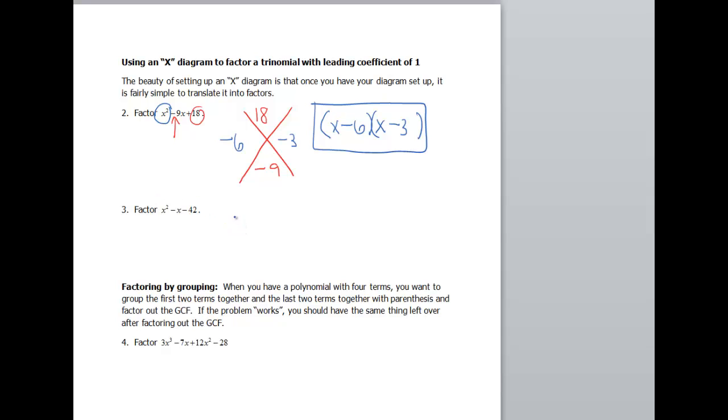Okay, next one. So again, let's go ahead and set up our x. And at the top, I'm going to put my constant term, so that's negative 42. At the bottom, I'm going to put a negative 1, because there's technically a 1 sitting there. So I need two numbers that multiply to negative 42 and add to negative 1. So that's going to be a negative 7 and a positive 6. Okay, so that means my factors are going to be x minus 7 and x plus 6.